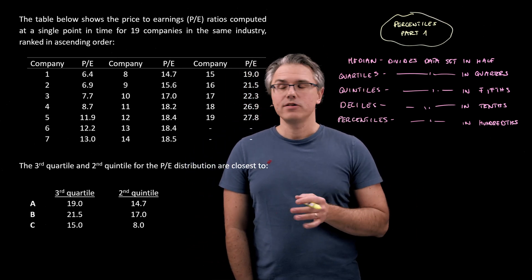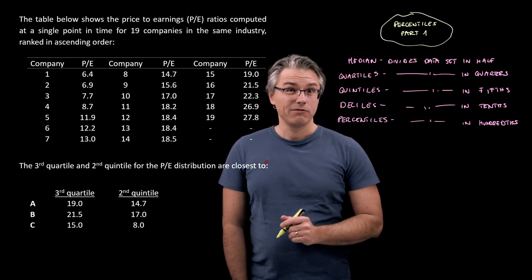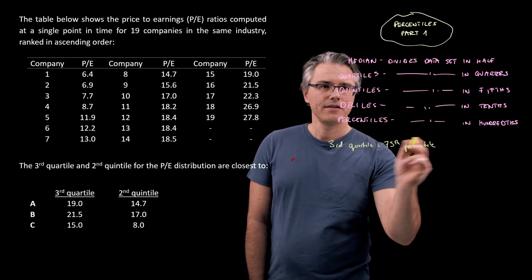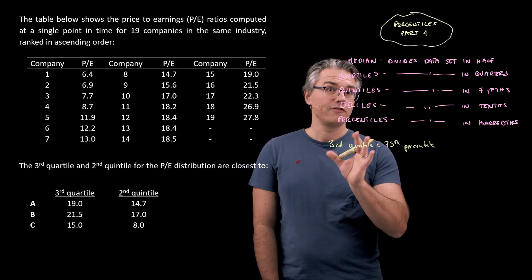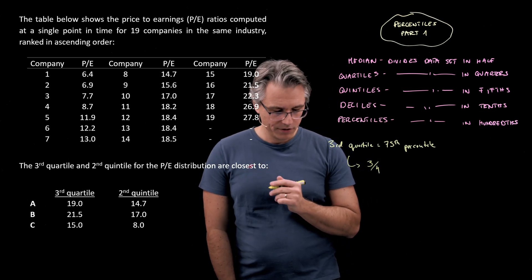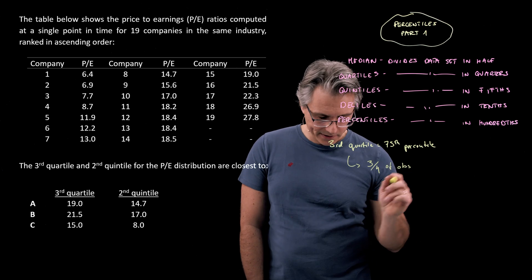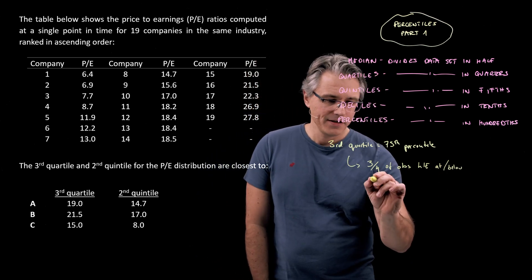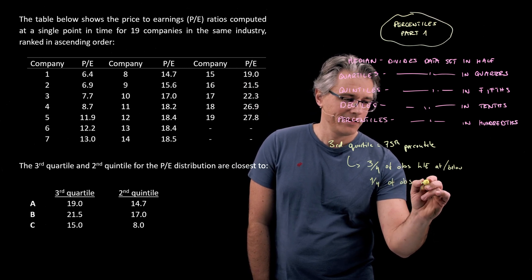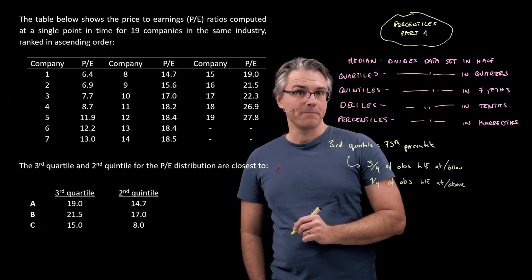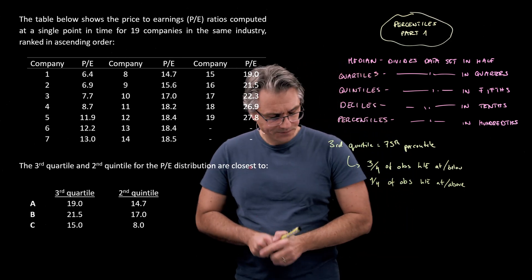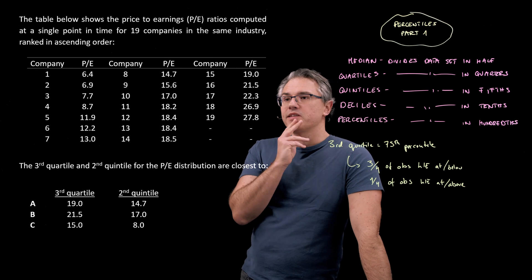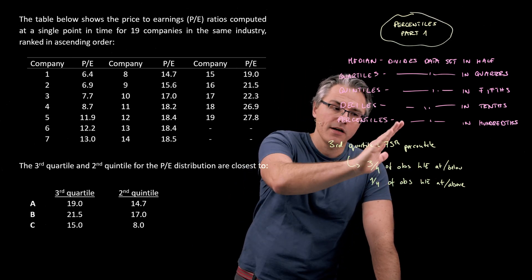How do we now proceed? Well, the question asks for the third quartile and then the second quintile. Let's start with the quartile. The third quartile is basically equivalent to the 75th percentile, and that's going to be the observation which causes the following effect: three quarters of the observations will lie at or below this figure, and the remaining quarter of observations will lie at or above this figure.